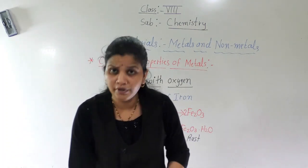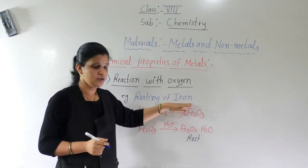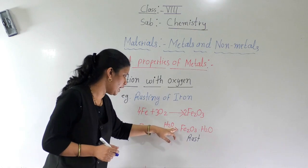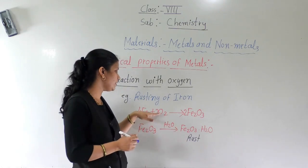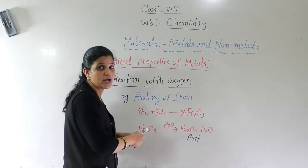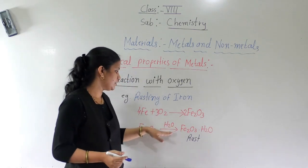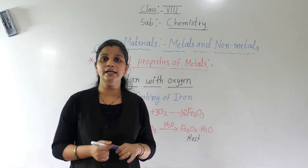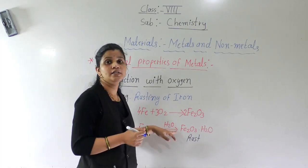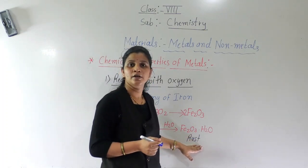Let us see some more examples. Do you understand the rusting of iron example? When iron reacts with oxygen in the presence of water, it forms metal oxide — iron oxide. But in the presence of water, H₂O, it forms hydrated iron oxide. The hydrated word is used because this reaction occurs in the presence of water. That is how rust is formed.